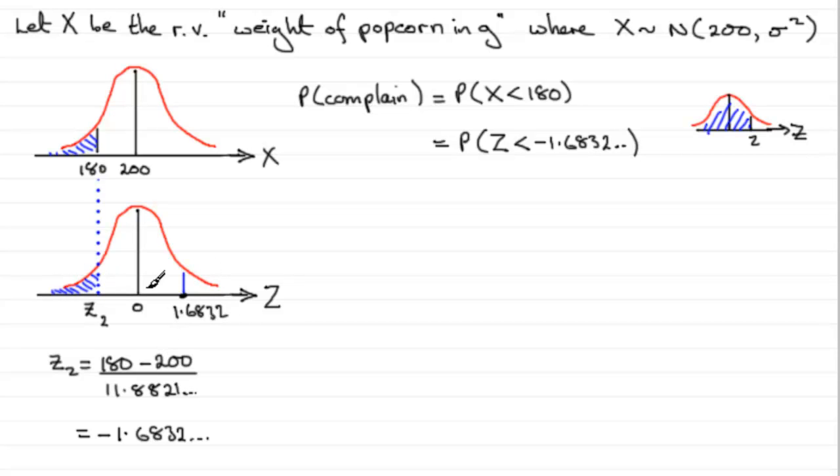And that area that I've shaded here will be exactly the same, then, as the area over here. So working out the probability of Z being less than minus 1.6832 is going to be exactly the same as working out the probability that Z is greater than 1.6832, and so on.